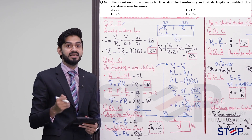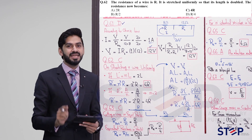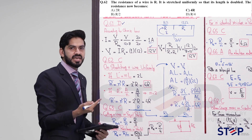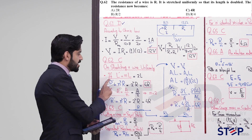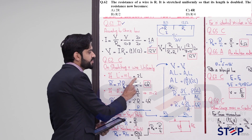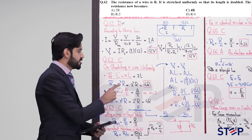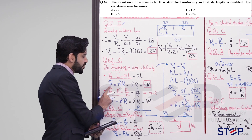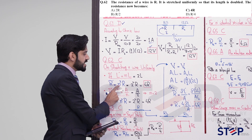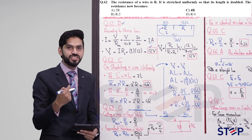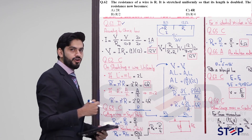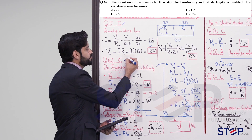That was the detailed method. Now the shortcut: when a wire is stretched and its length becomes N times, the new resistance = N² times the original resistance. Here, length doubled so N = 2, and R' = 2² × R = 4R. So question 62's answer is 4R, which is option D.